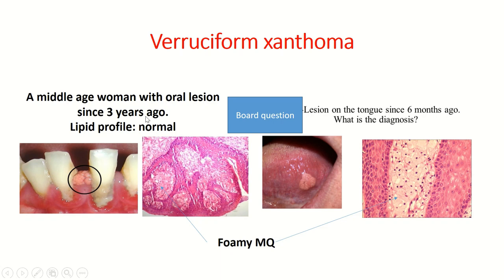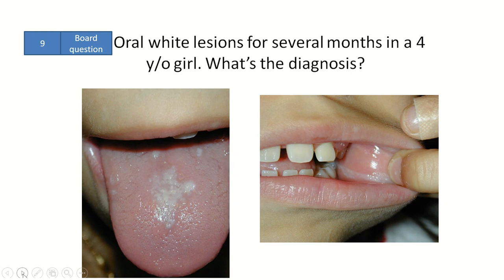A middle-aged woman with oral lesions since three years ago, and another patient with lesions on the tongue since six months ago. These lesions are commonly asymptomatic.